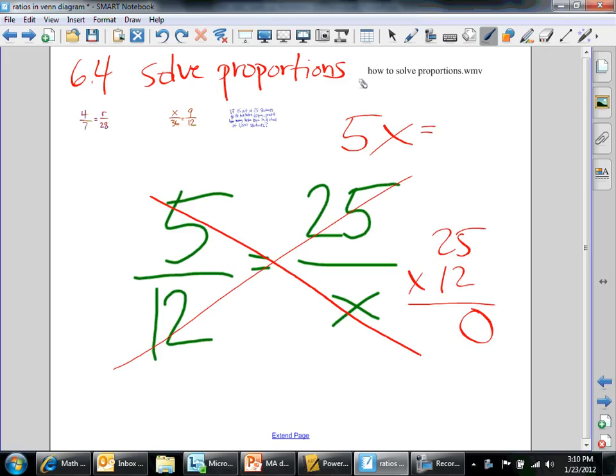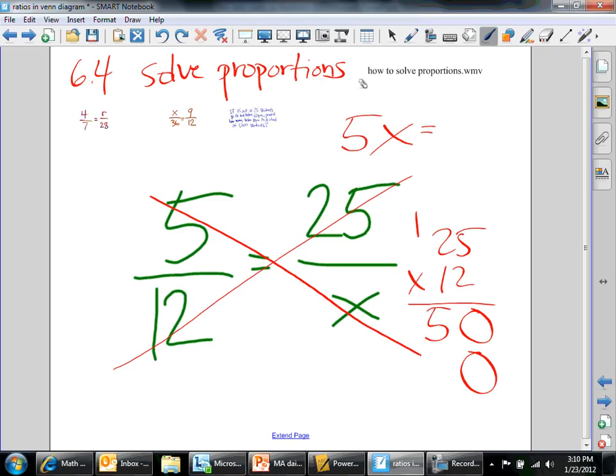5 times 2 is 10, carry the 1, 2 times 2 is 4, plus 1 makes 5, don't forget about that 0, 5 times 1 is 5, and 2 times 1 is 2. Add those together, you get 300. So 5x equals 300.